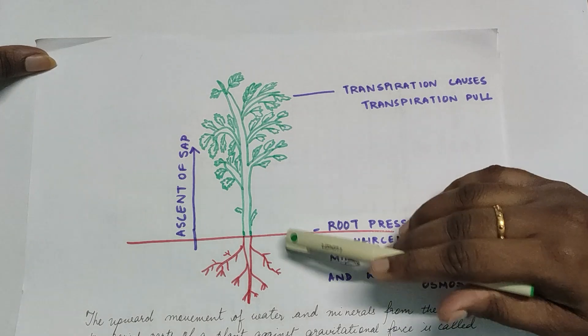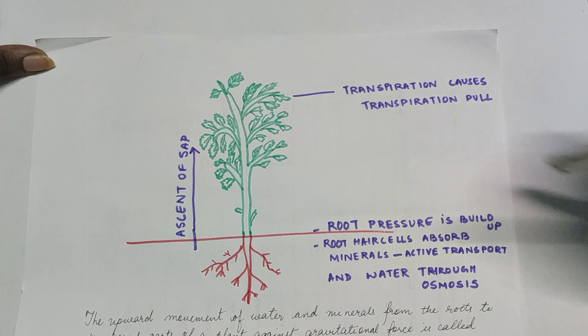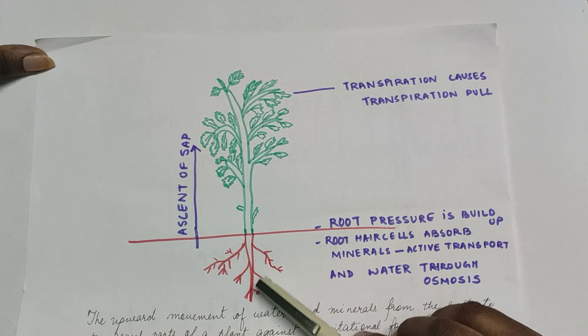It is of a plant and I have written some points regarding the transport of minerals and water. As you can see, we have discussed it before as well. The root hairs are there in the root which absorb the water and minerals.